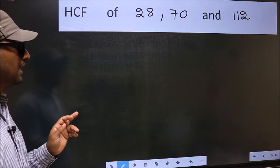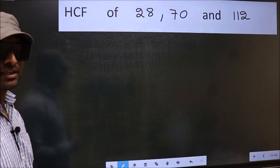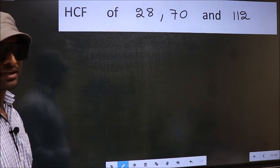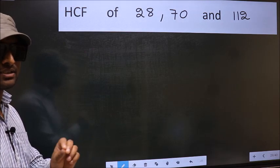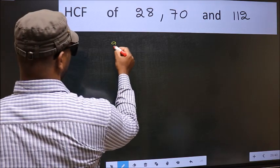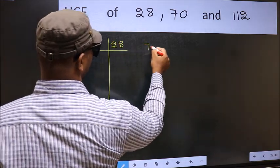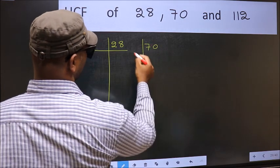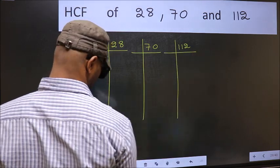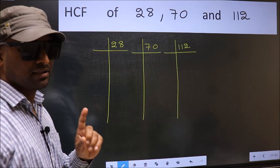HCF of 28, 70 and 112. To find the HCF, we should do the prime factorization of each number separately. That means 28, 70, and 112. This is your step 1.